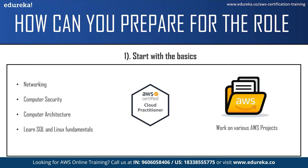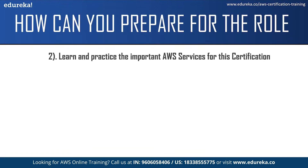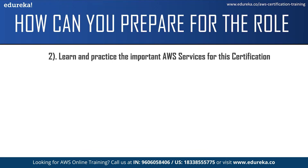The next step would be working on AWS projects. You can work on projects on different services — start with easier projects initially and then move on to the difficult ones. You can find some good projects on Amazon Web Services' official website. The next step is learning and practicing the important AWS services for the certification.